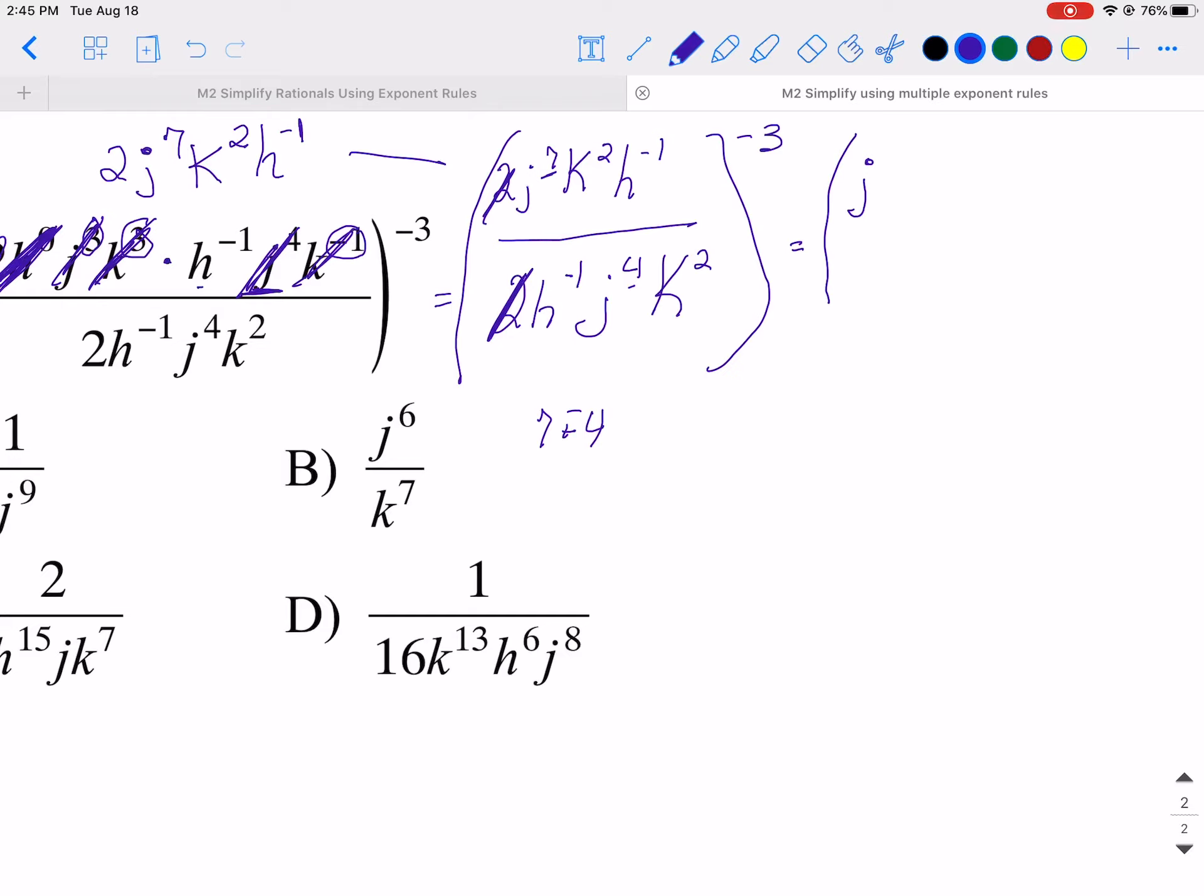I've got a 2 up top and a 2 down below. They cancel out to the number 1, so that's good. So now I'm going to write my J. I've got a 7 here and a 4 here, so it's 7 take away 4, which is really add negative 4. So I've got J3. K, I've got 2 up top, 2 down below, so 2 take away 2, which is 0. So K0. And then H. I've got a negative 1, negative 1 minus a negative 1. So that is really negative 1 plus 1, which is also 0. So there's nothing in the denominator left, but that's still raised to that outside exponent of negative 3.